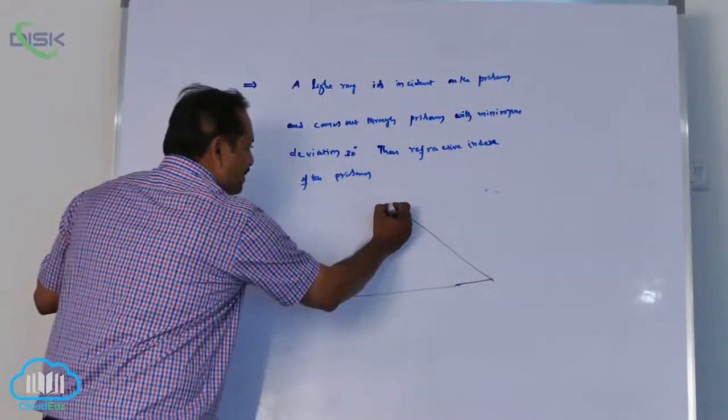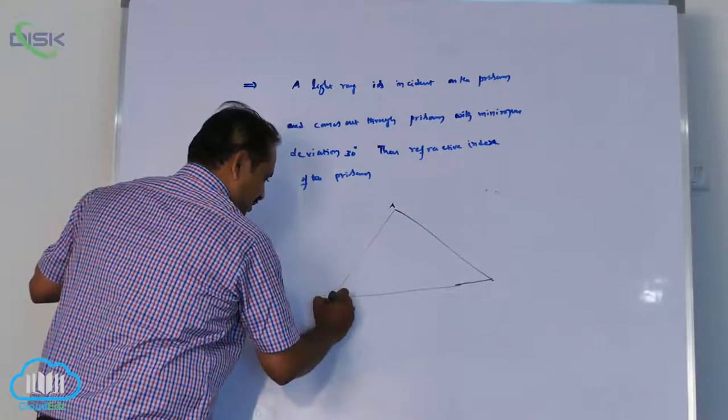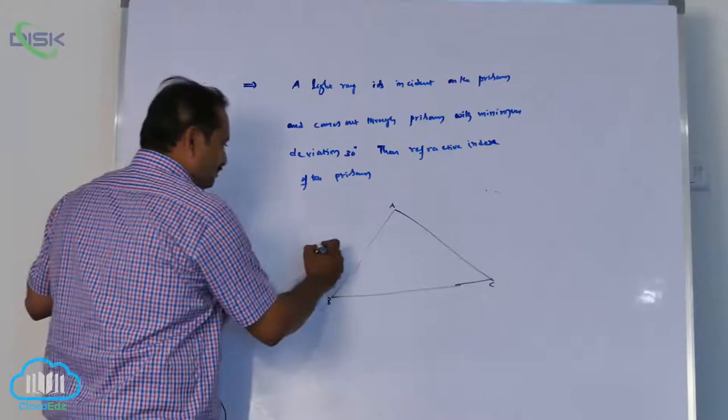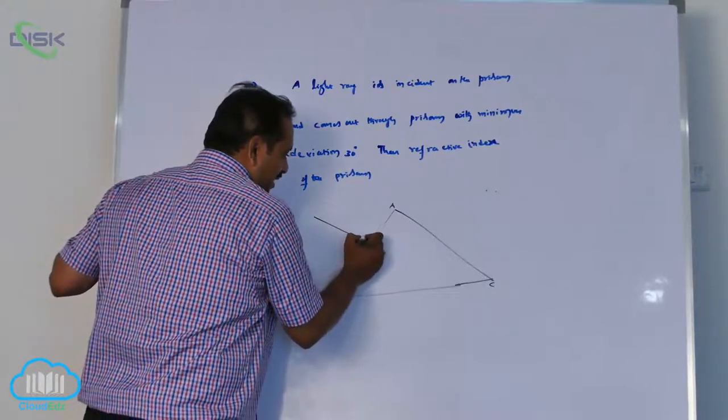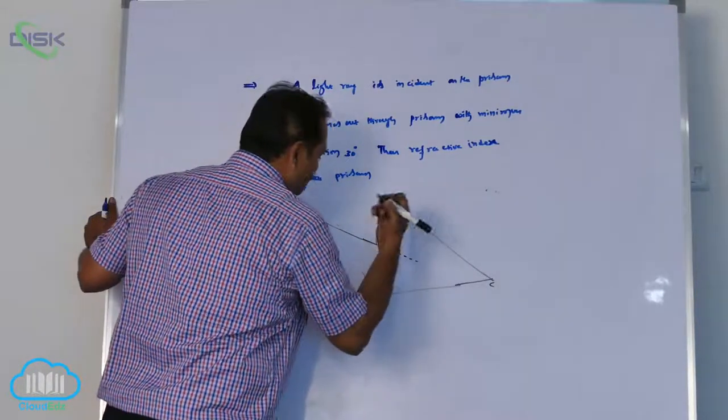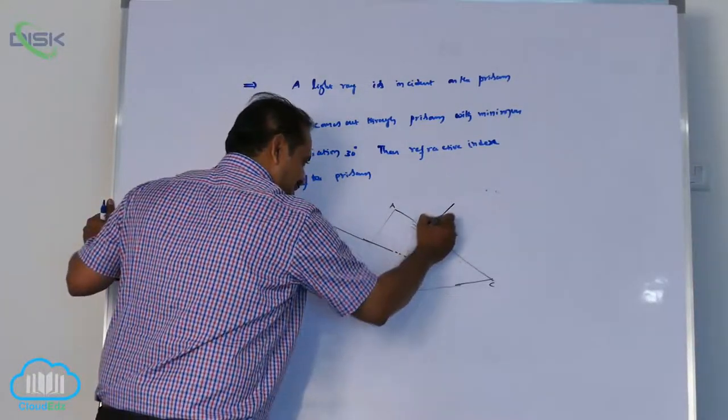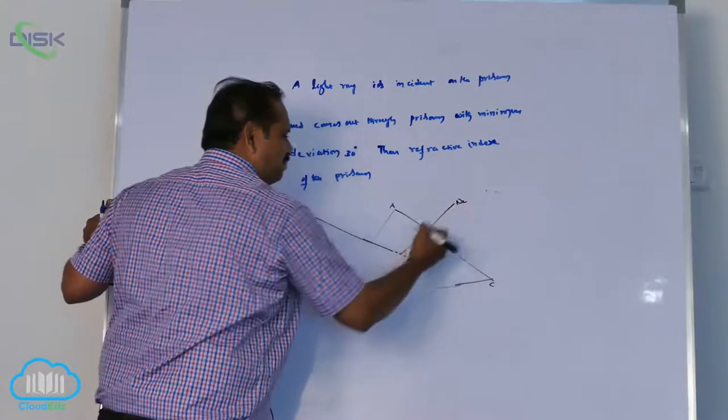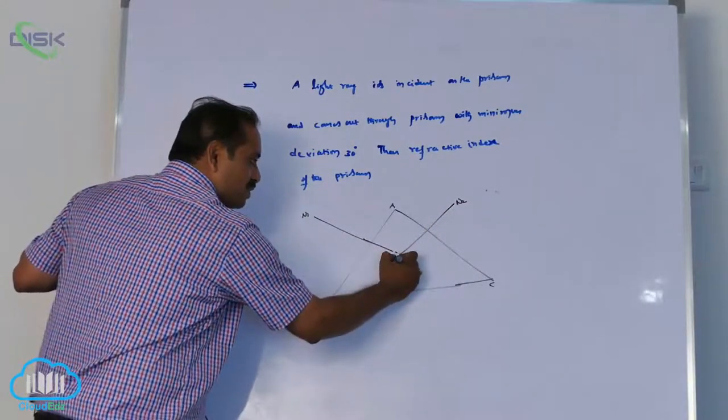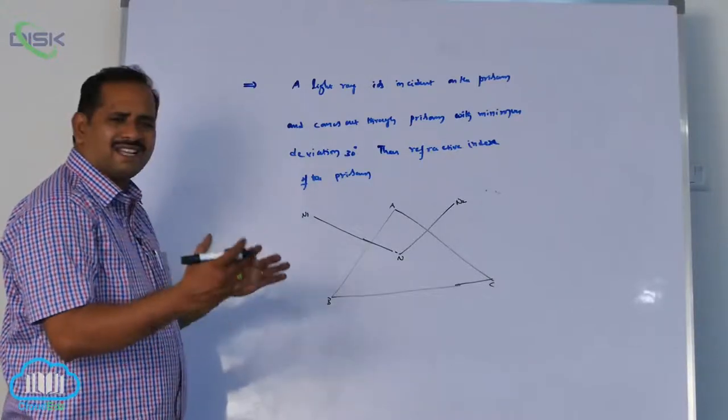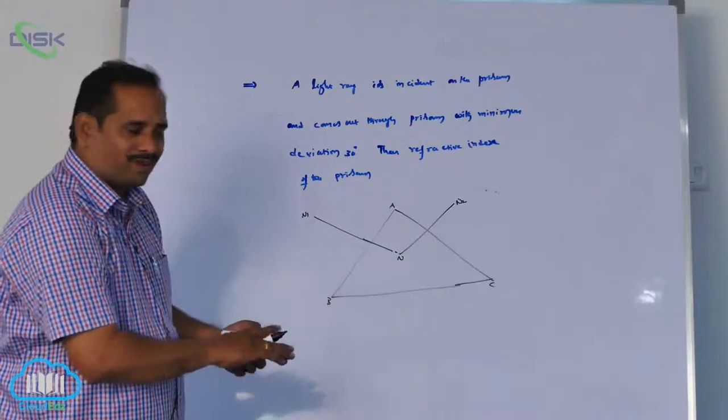ABC is a prism. Light is incident on the prism like this - he said any angle to you? No, just let it be imagined. This is normal N1, N2. In ray optics, first of all you should approach the things with normals. Why? Because angle of incidence or anything, I want measurements with normal only.